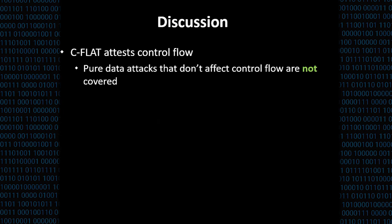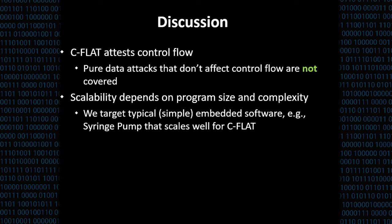It's noteworthy to mention that C-FLAT attests control flows. That means if you have a pure data attack that does not influence any control flows, this is not represented into an illegitimate hash value. Consider for this an example where you have a send function that simply reads from a buffer and if that data pointer is corrupted to point to a cryptographic key, then that key is sent but the control flow remains the same.